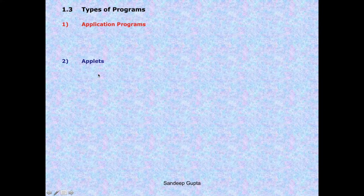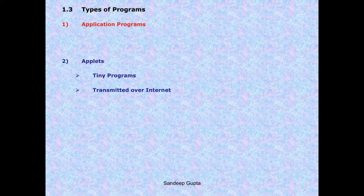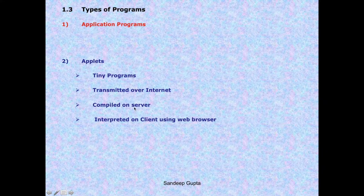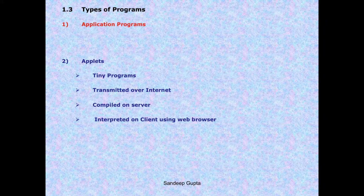Let's talk about applets first. Applets are small, tiny programs which are meant to be transmitted over the internet - they are transmitted by the server to the client. Keep in mind that applets are compiled on the server and interpreted on the client using a web browser. On the server, the source code of the applet is converted to bytecode - compilation happens on the server. The server sends the bytecode of the applet to the client. On the client there is a Java-enabled web browser with built-in JVM, which converts the bytecode to machine code and the applet executes.